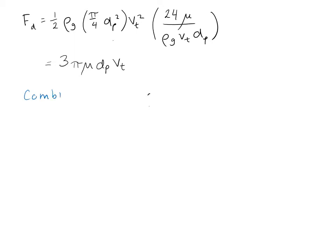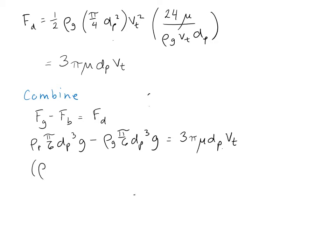We're going to combine those in our original force balance, where we move the buoyancy force over to the left-hand side. So we have f sub g minus f sub b is equal to f sub d. So the gravitational force was rho sub p times pi over 6 d sub p cubed times g. The buoyancy force was rho sub g, the density of the gas, times pi over 6 d sub p cubed times g. On the left-hand side, we can combine things as rho sub p minus rho sub g. Then we still have pi over 6 d sub p cubed times g is equal to 3 pi mu d sub p v sub t.